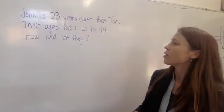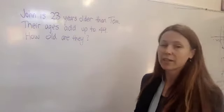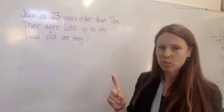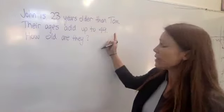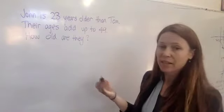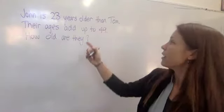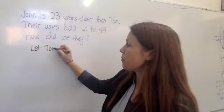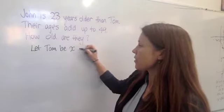John is 23 years older than Tom. Their ages add up to 49. How old are they? We want to make one equation that only has one pronumeral in it. So, I'm thinking we need to define one of these people as, let's call it x. Let's let Tom be x years old.